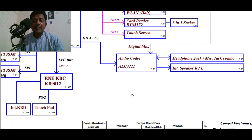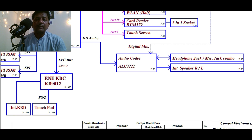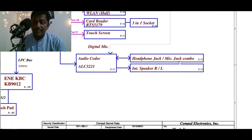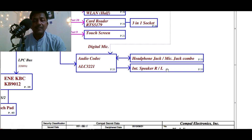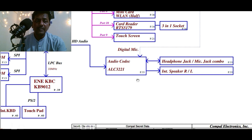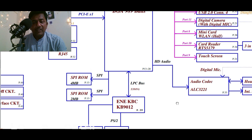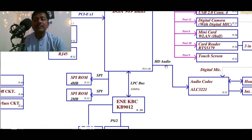If you take any schematic, you will generally find a codec audio IC which is connected between the headphone/mic jack combo and the speaker connection. Any audio IC in any schematic will generally connect to the mic jack or audio jack plus the speaker. The first basic thing to know about the audio IC is what the codec is and what functions it performs. The PCH is connected to the codec through the HD audio bus.